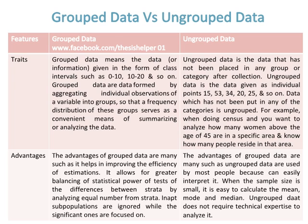For example, when conducting a census and you want to analyze how many women above the age of 45 are in a specific area and know how many people reside in that area, this represents the use of ungrouped data in its raw collected form.